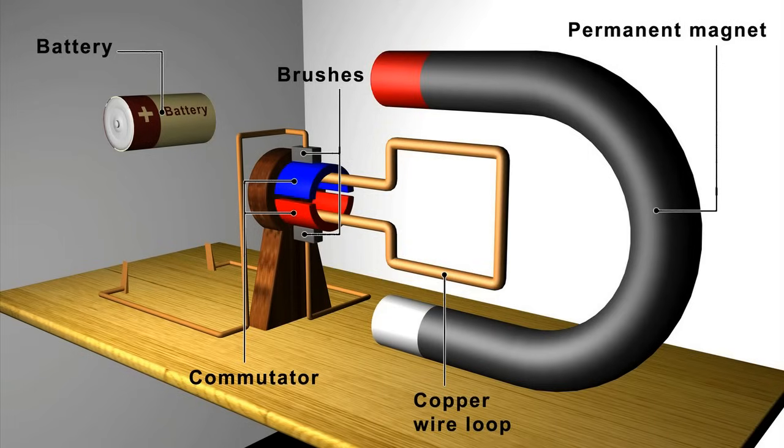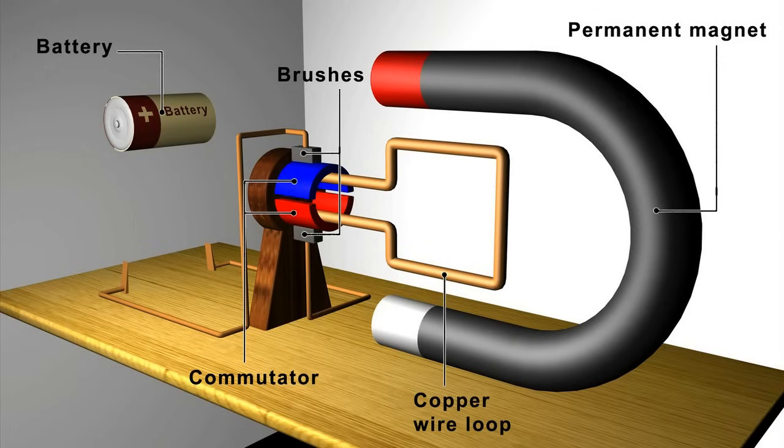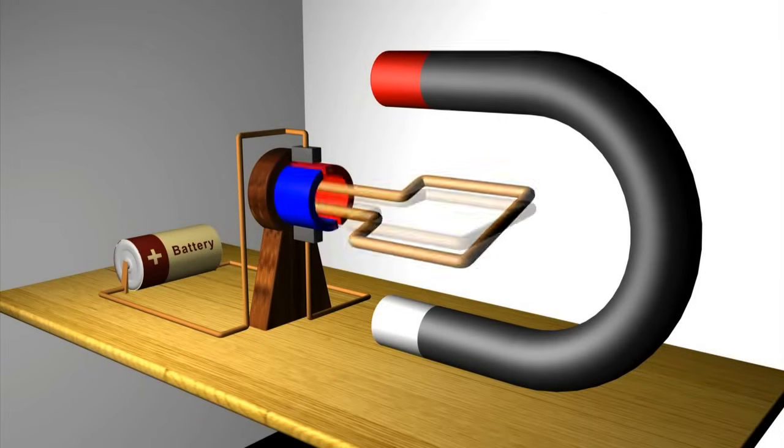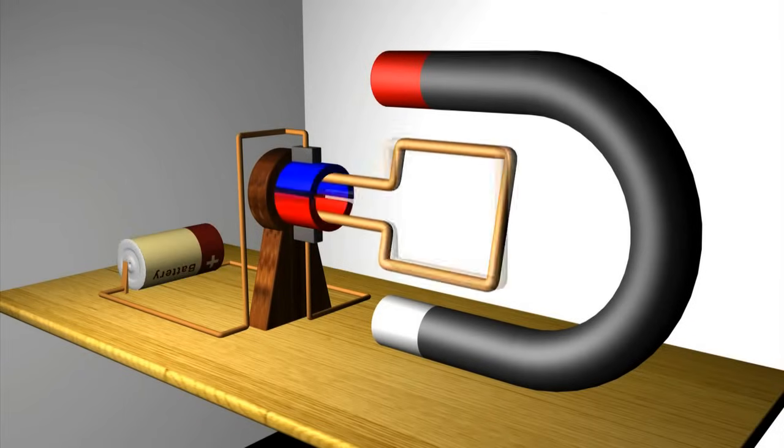The brushes are attached to a wooden support and the commutator is fixed to the loop of copper wire. The commutator rotates freely, rubbing against the brushes.